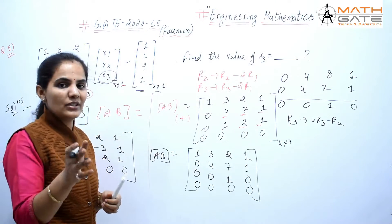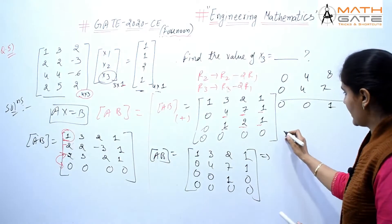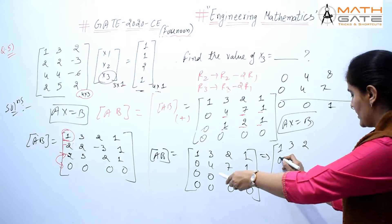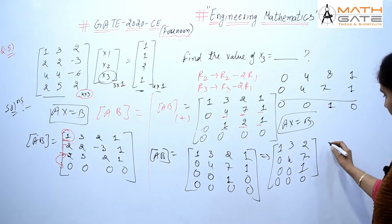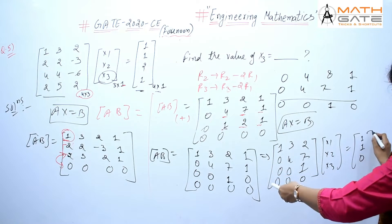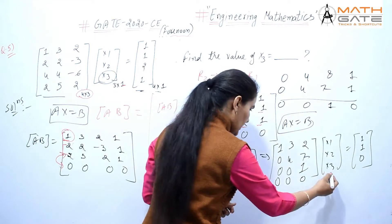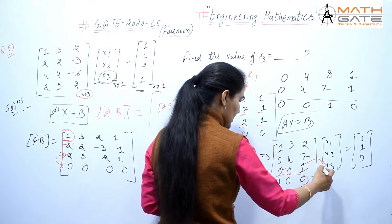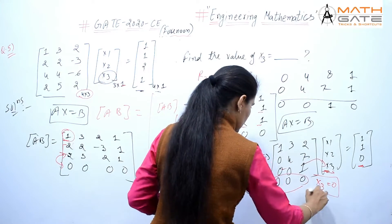From this augmented matrix [A|B], we need to find x3. Matrix A is: [1,3,2; 0,4,7; 0,0,1; 0,0,0] and B is [1; 1; 0; 0]. Using back substitution from the bottom, the last meaningful row gives us 1×X3 = 0, so X3 = 0.